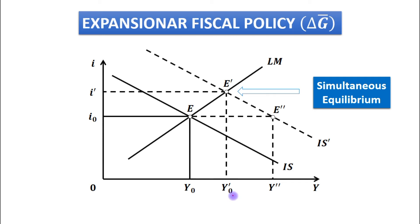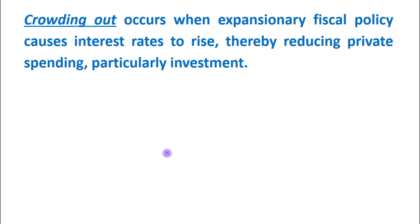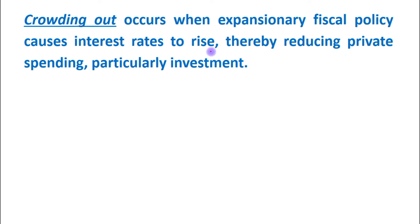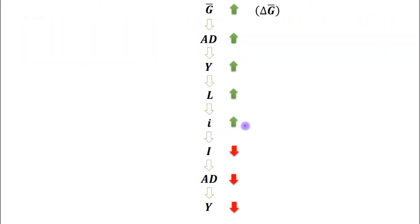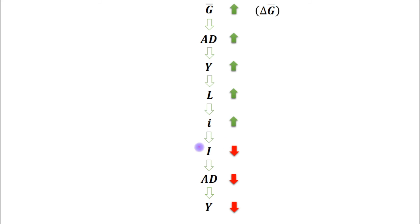So when the interest rate increases, output level decreases from y double-dash to y dash 0, and this decrease in output is termed as crowding out. Crowding out occurs when expansionary fiscal policy causes interest rates to rise, thereby reducing private spending, particularly investment.